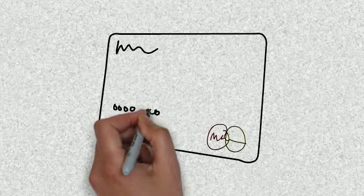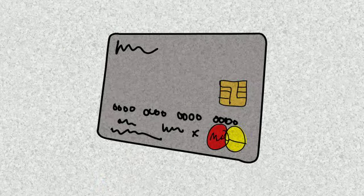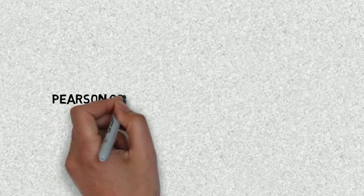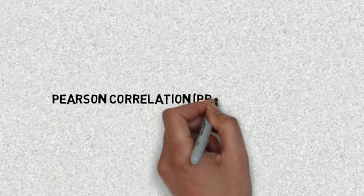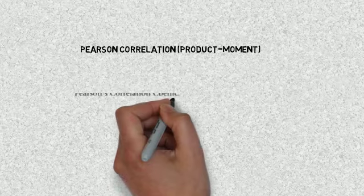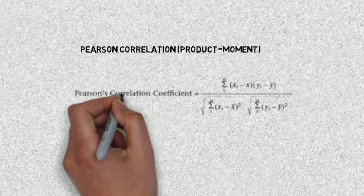In credit scoring, we would typically use Pearson and Spearman correlation methods. Pearson correlation, also known as product moment correlation, measures the linear relationship between two variables. The formula calculates R, also known as Rho, which represents the covariance between X and Y.